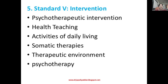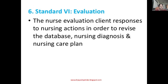Standard Five is intervention. After planning, we step into implementation — that is intervention — including psychotherapeutic interventions, health teaching, activities of daily living, somatic therapies, therapeutic environment, and psychotherapy. These are the interventions performed for psychiatric patients. Standard Six is evaluation. The nurse evaluates the client's responses to nursing actions in order to revise the database, nursing diagnosis, and nursing care plan. Whether the patient has benefited or not, outcomes and feedback are taken from the patient. If the problem is resolved, we move to another intervention; if not, we go back to assessment and data collection — the cycle repeats. This completes the professional practice standards.